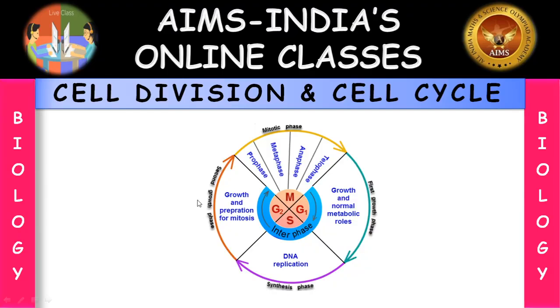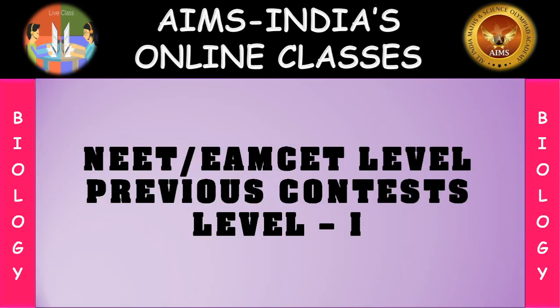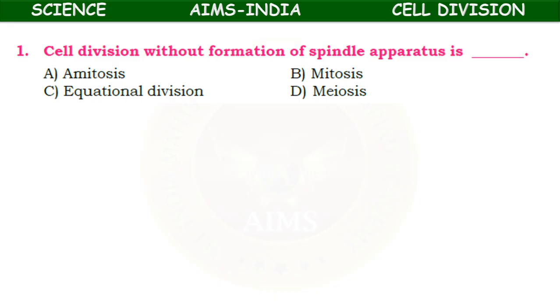Hello children, welcome to AIMS India's online classes biology session on cell division and cell cycle. In this chapter we have completed the types of cell division: amitosis, mitosis, and meiosis, along with the concept of cell cycle in the last class. With which the lesson is completed, so let us proceed to the worksheet level one, which includes questions repeated in the previous contest. Let us discuss the questions — are you ready children?